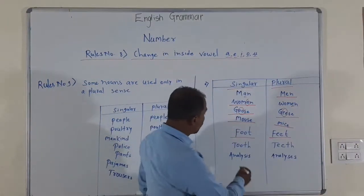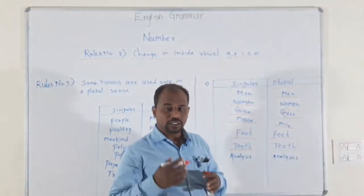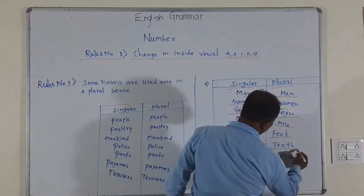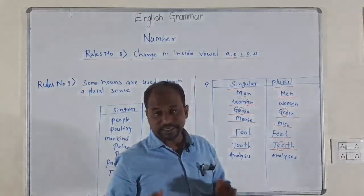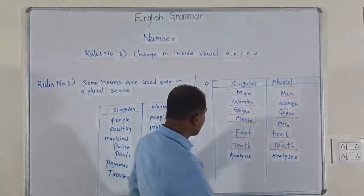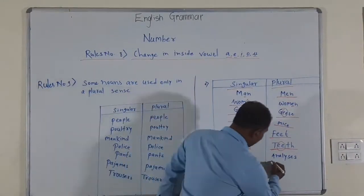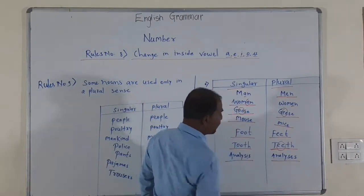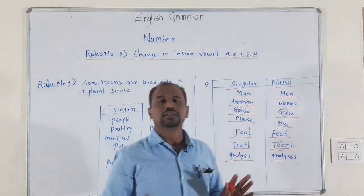Then tooth — T, double O, T, H — in the plural form we remove the double O and use double E: teeth. That is the plural form of tooth. Then analysis — here we remove the I and use E to form the plural, as both E and A are vowels.